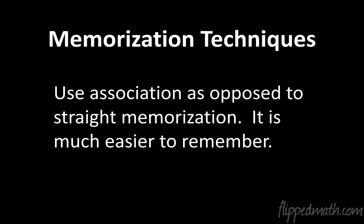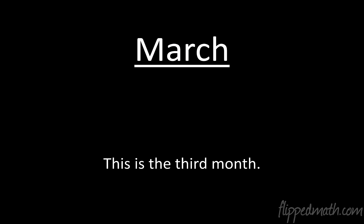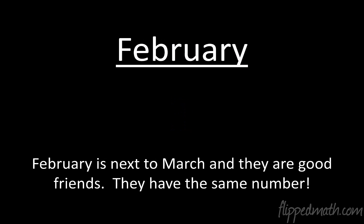I have some memorization techniques to help you remember these month values — we're going to use association rather than straight memorization. January is the starting point of the year, the very first month. What is the lowest possible value? Zero. January is the beginning, so we start at zero. March is the third month — that's a three. Easy. February is the shortest month, kind of a little weakling, so it tags along with its buddy March and has the same number, three.